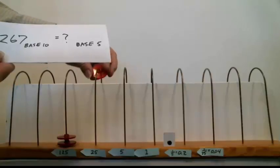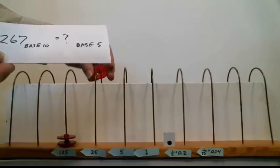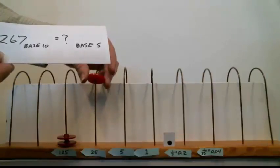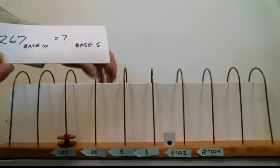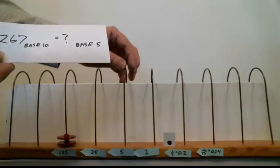25, each one of these is worth 25. I'm at 250 right now. If I try to put this on there, 250, that's 275. Well, that's too big. So I've got to leave this wire blank. Let's go to the next wire.